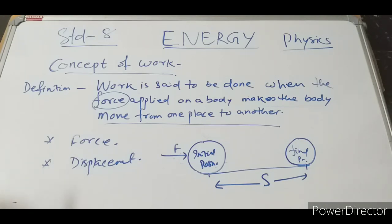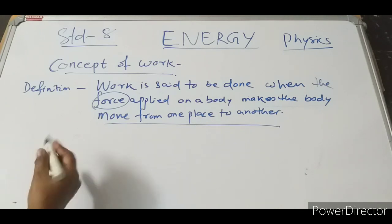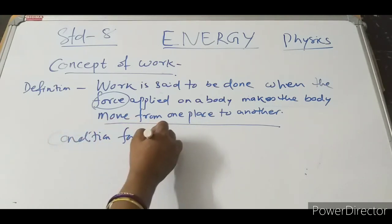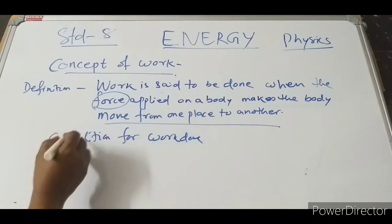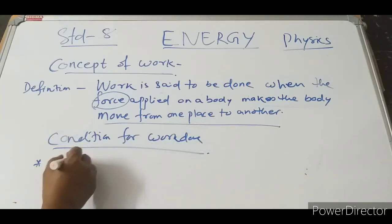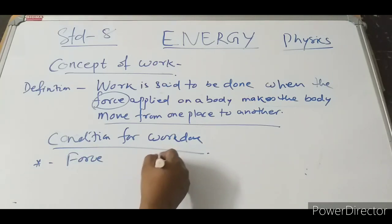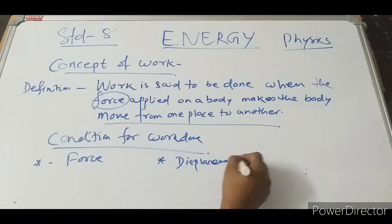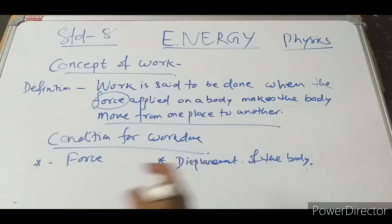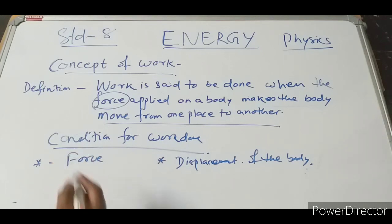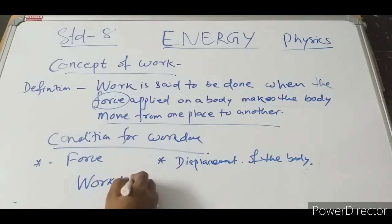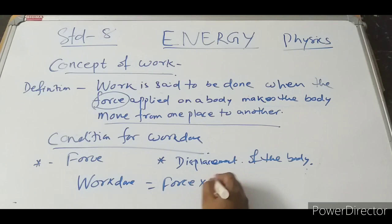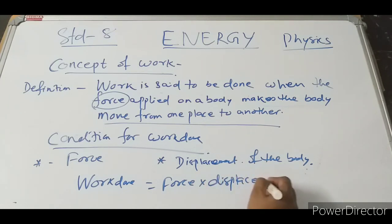Now, what should be the condition for work? First condition: force must be applied on the body. Second condition: there must be displacement of the body. Keeping these two in mind, the formula for work done is: work done equal to force into displacement, or W equal to Fs.